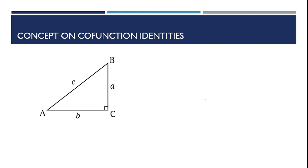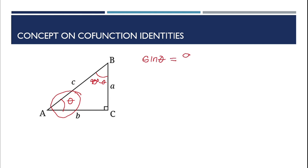Let us have an illustration for cofunction identities. We will name this angle as theta. If this is our theta and this is 90 degrees, then its complement is equal to 90 degrees minus theta. The angle of the complement is equal to 90 degrees minus theta. Let us assume we will look for sine theta. Sine theta is equal to the opposite side, which is a, over the hypotenuse, which is c.